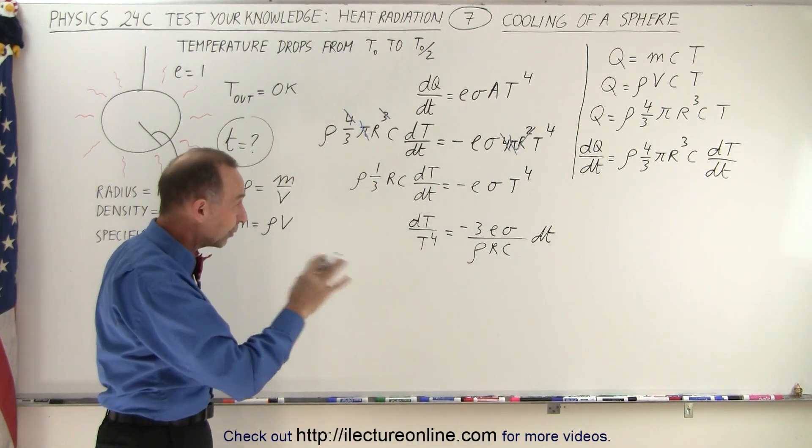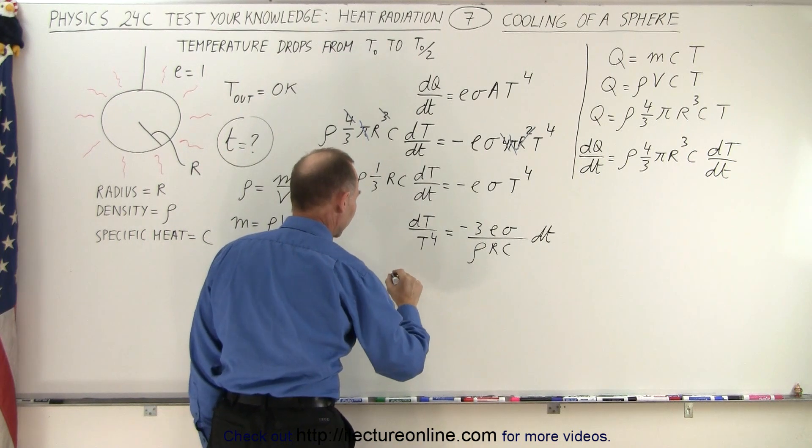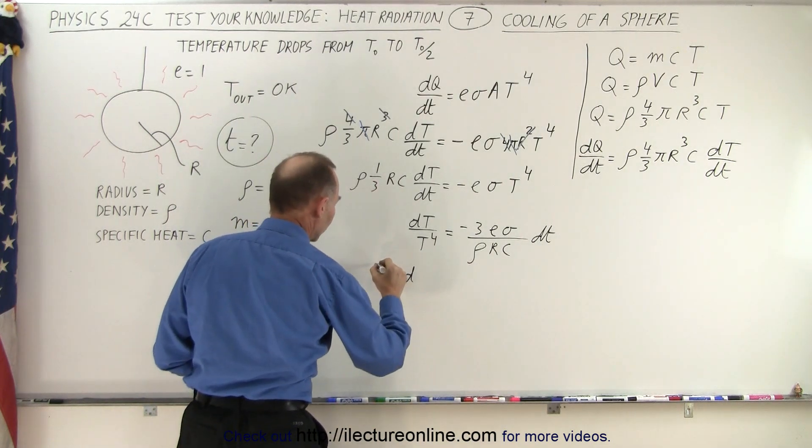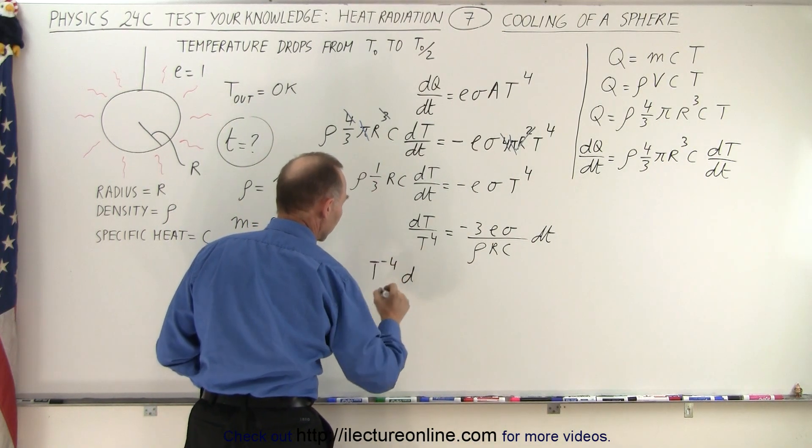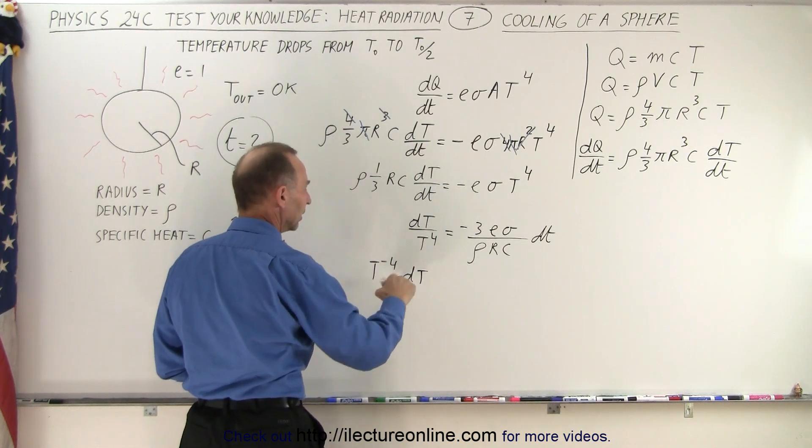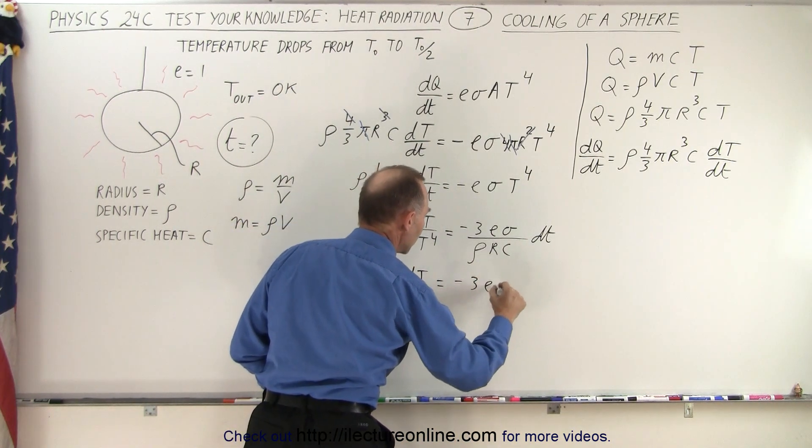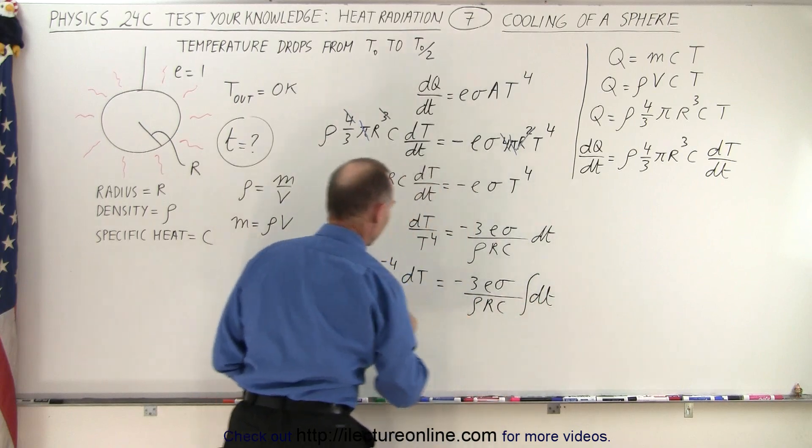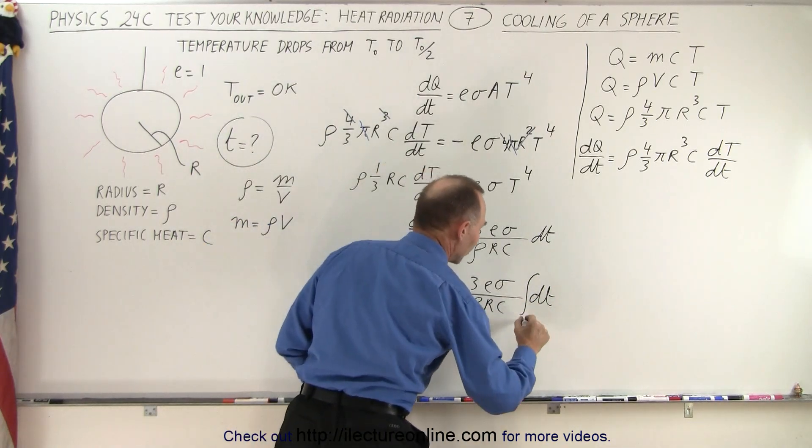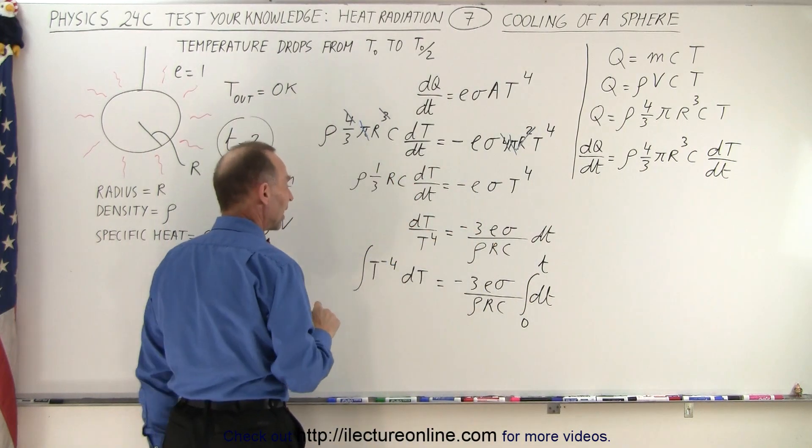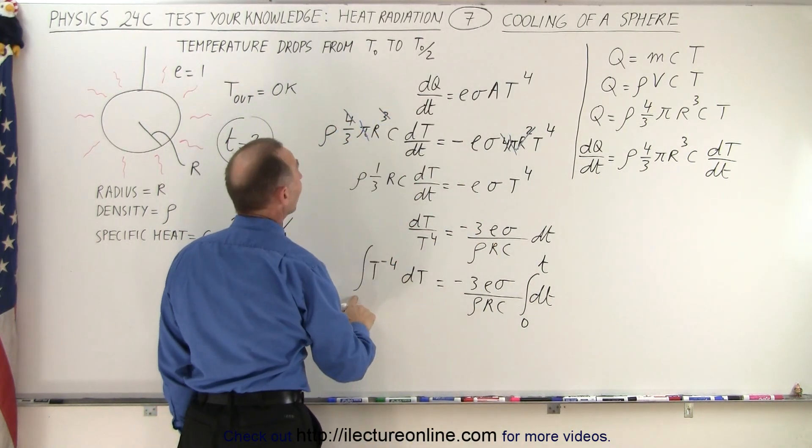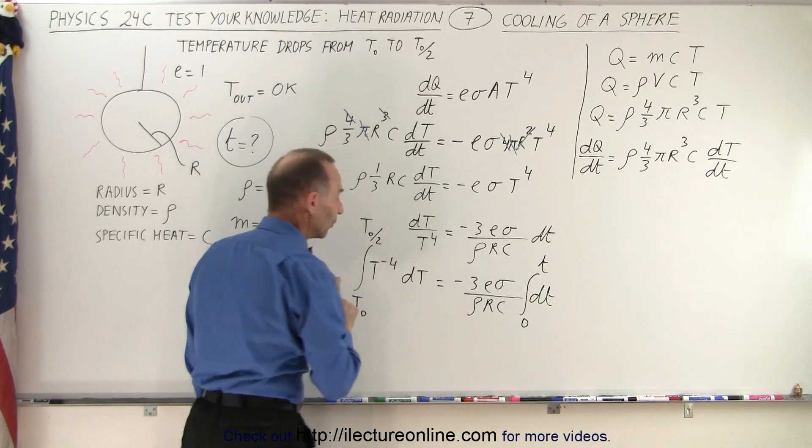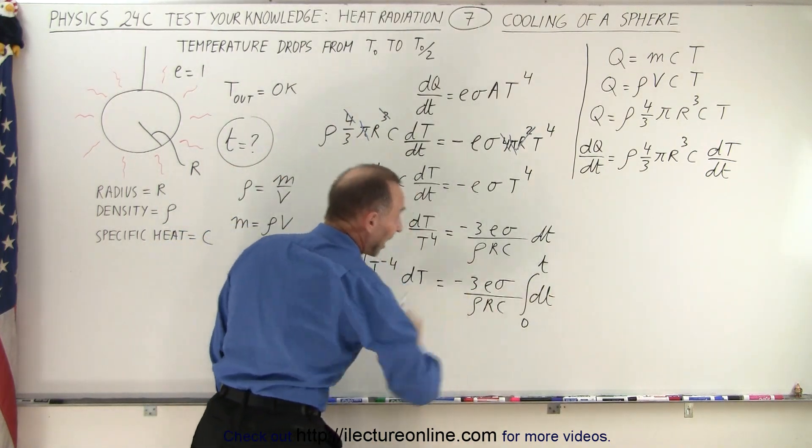In order to integrate both sides, we're going to rewrite this a little bit differently. We're going to write this as T⁻⁴ dT, bring it up to the numerator, equals -3εσ/(ρRC) dt. And when we integrate the two sides like this, we're going to integrate from 0 to t over the entire duration of time that it takes to go from here to here, and from the initial temperature T₀ to the final temperature T₀/2. So that's what we're going to do, and this way we're going to find the time that it requires.